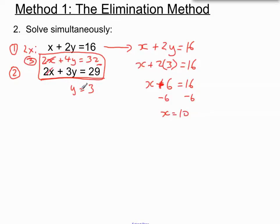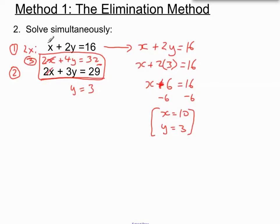So we had y equals 3 and x equals 10 — we'll just write them together. And we solved that pair of simultaneous equations. We had to adjust because we didn't start out with the x values or y values matching up in size. If we're multiplying by something, we have to make sure we multiply every term by that same thing.